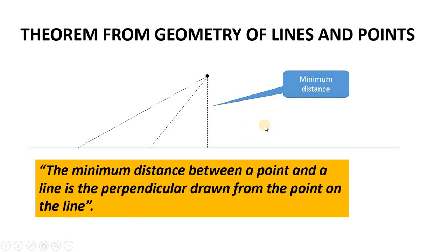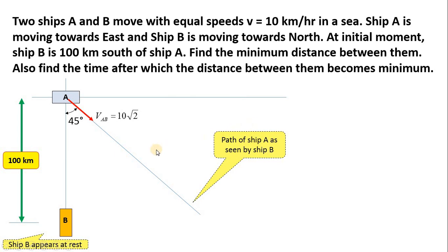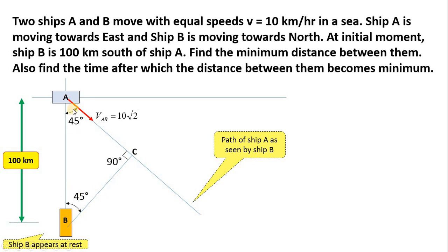We are going to use this technique to solve the question. This line is the path of ship A as seen by B. The minimum distance is the one which is perpendicular to this line, drawn from B. We draw this perpendicular and label the foot as point C, giving a 90-degree angle. The remaining angle in triangle ABC is 45 degrees, because 45 + 90 + 45 = 180 degrees total. So we have all three angles of triangle ABC.